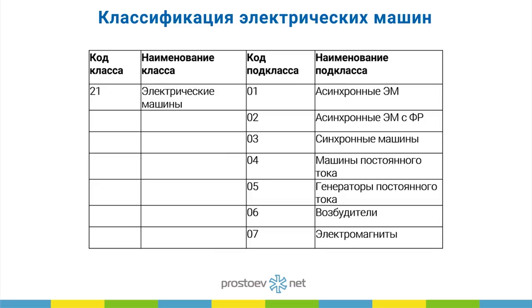Физические машины, то есть все знают, что они классифицируются по определённым принципам — в том числе генераторы, грудители, магниты. Это классика описания физических машин.